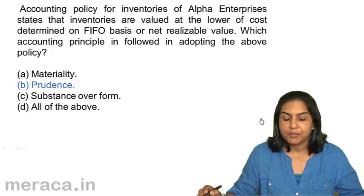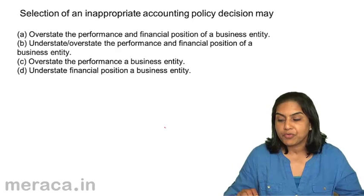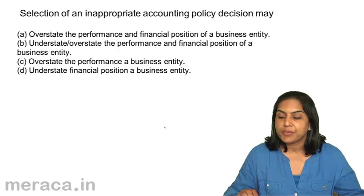Next question: selection of an inappropriate accounting policy decision may — A. Overstate the performance and financial position of a business entity. B. Understate or overstate the performance and financial position of a business entity. C. Overstate the performance of a business entity. D. Understate the financial position of a business entity.